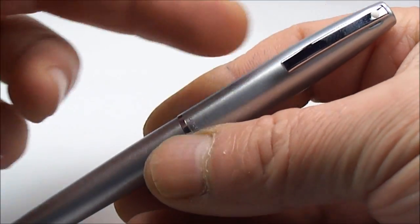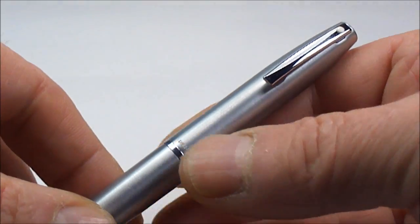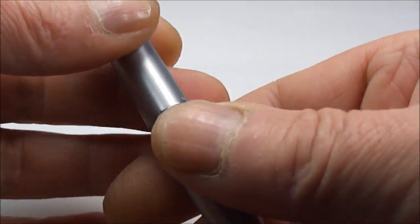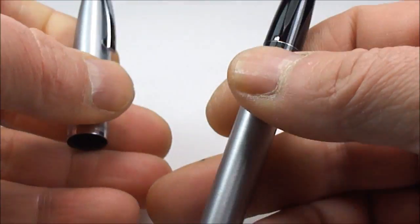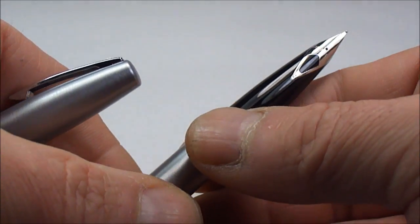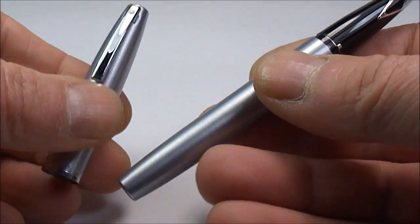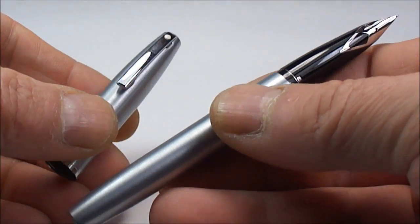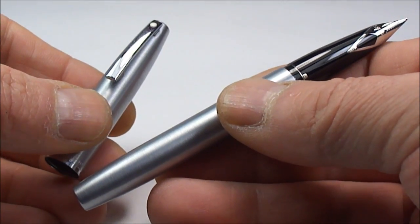The next one is the 444XG. The difference there, it comes again with gold plated trim or clip, and the difference on the 444XG, it now comes with a 14 karat gold inlaid nib. This particular one is just the basic Sheaffer 444.